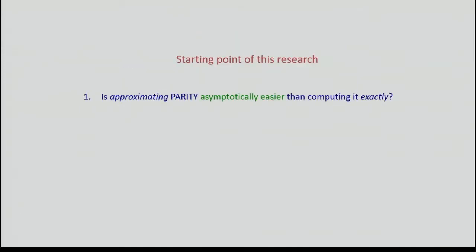Let me start with three questions we didn't quite know the answer to at the start of this research. The first question is: is approximating parity asymptotically easier than computing it exactly? We saw that computing parity requires roughly 2^(N-1) terms. Can you 0.1-approximate parity with size 2^N / log N, or 2^N / poly(N)?